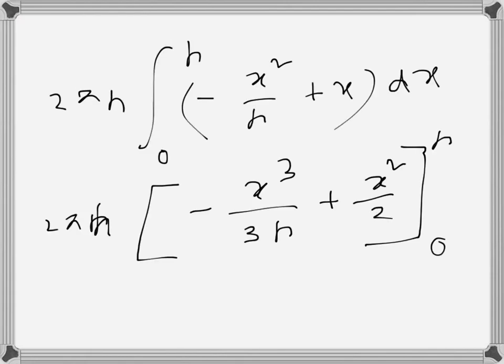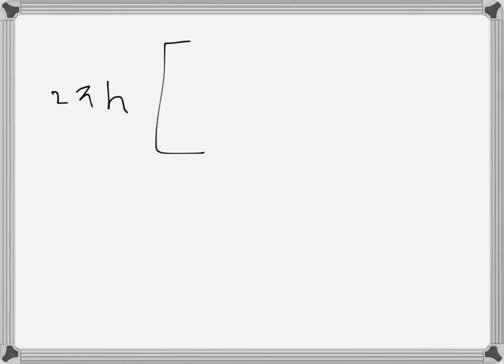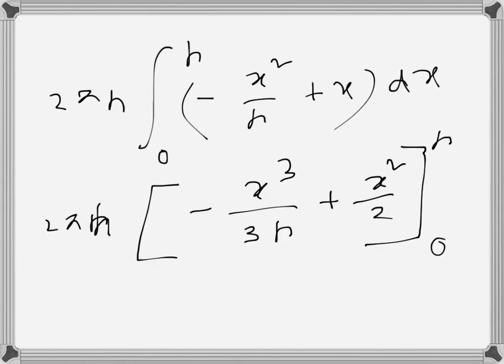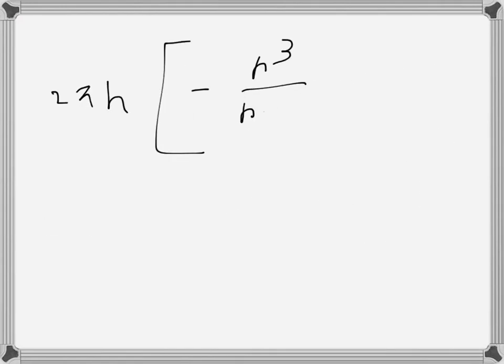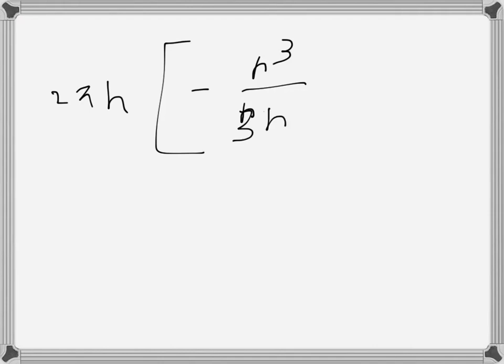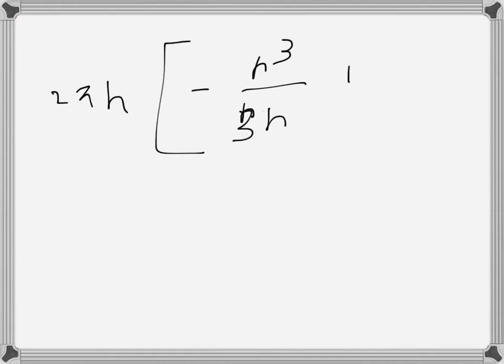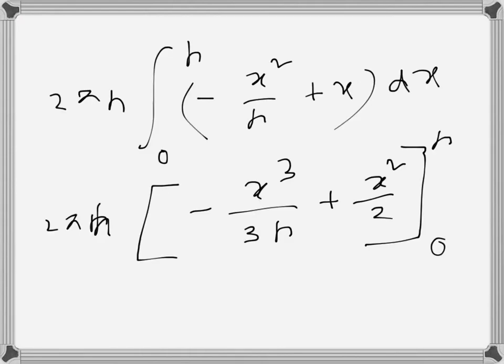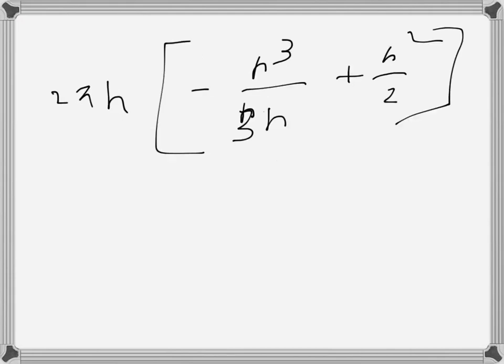This becomes minus r cubed over 3r, which is minus r squared over 3, plus r squared over 2.